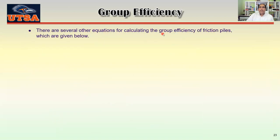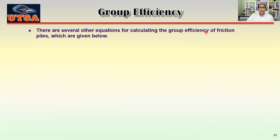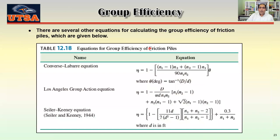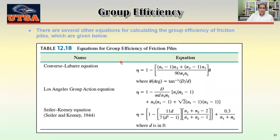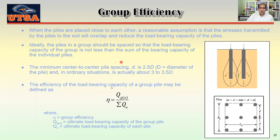There are several empirical equations to find out the group efficiency for friction piles proposed by different researchers. You can use any of those relationships or use the standard efficiency equation: eta equals QG,ultimate divided by summation of Qu for individual piles.